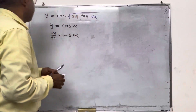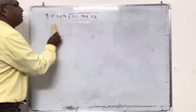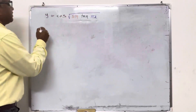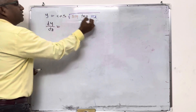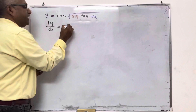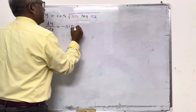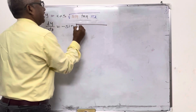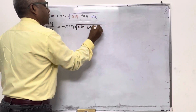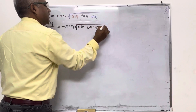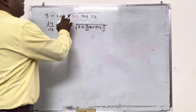Now, y equal to cos of square root of sine tan pi x. When we differentiate, d by dx: what will happen to cos? Minus sine — so we write minus sine, and carry sine tan pi x as it is.